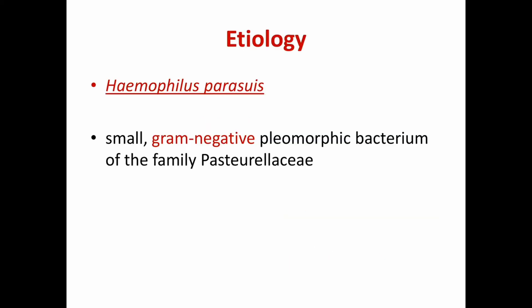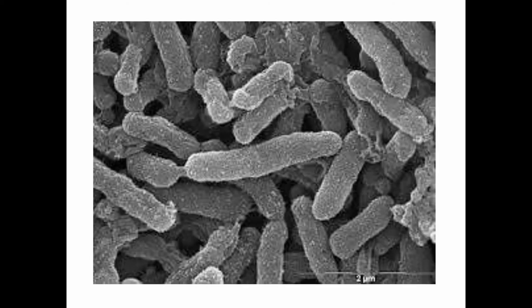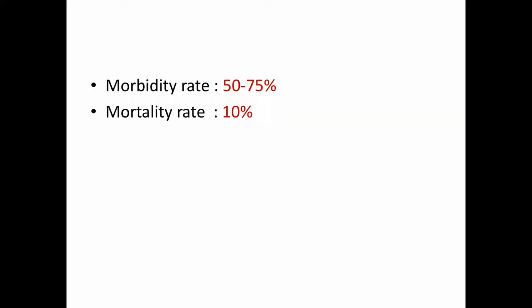Coming to the etiology of Glässer's disease, Haemophilus parasuis, a gram-negative pleomorphic bacterium of the family Pasteurellaceae, is the causative agent of this disease.